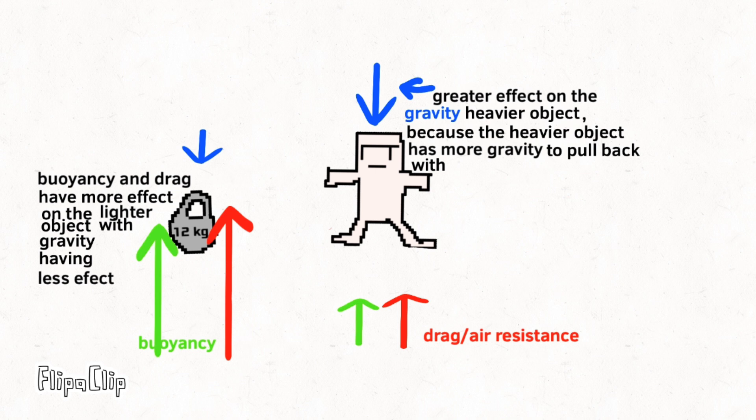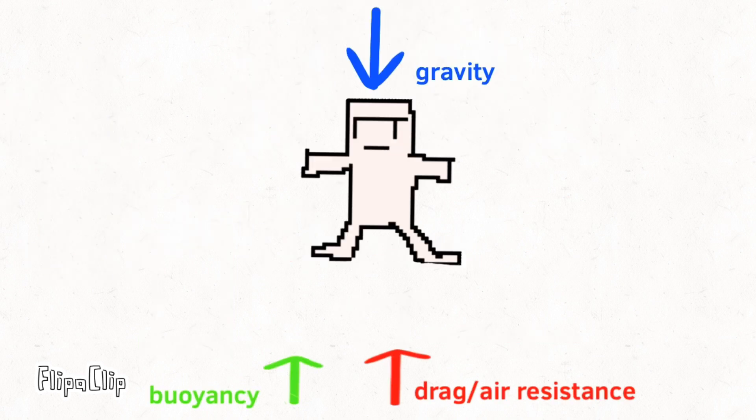However, with lighter objects, gravity's force is still the same, but buoyancy and air resistance have a higher effect on them. Thus, equilibrium is reached faster, reaching terminal velocity sooner.